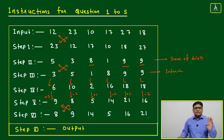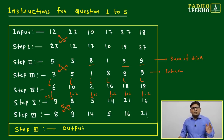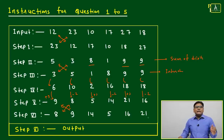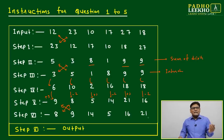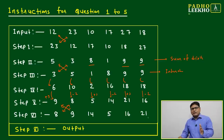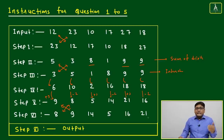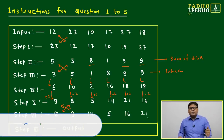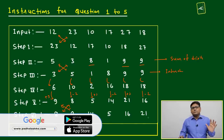Step 6 is the output, and it involves interchanging positions again. So to summarize: Step 1 is interchanging, Step 2 is sum of digits, Step 3 is interchanging again, Step 4 is doubling, Step 5 is adding +3 and subtracting -2 alternately, and Step 6 is interchanging again.